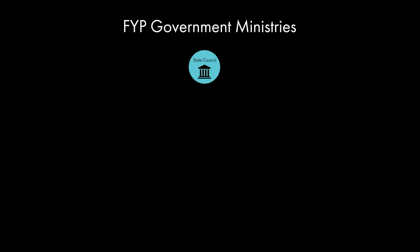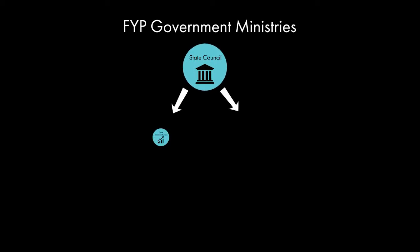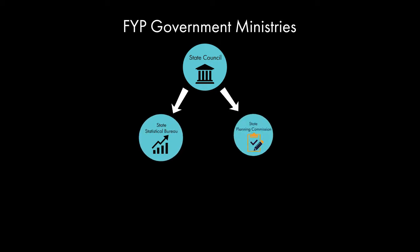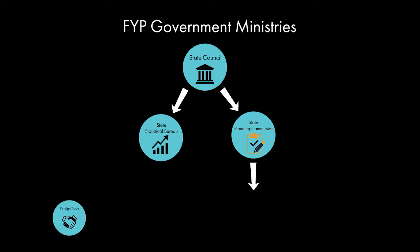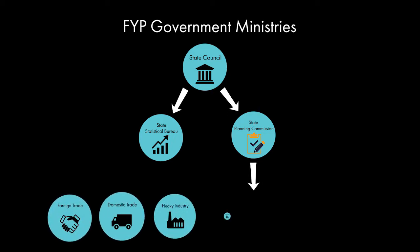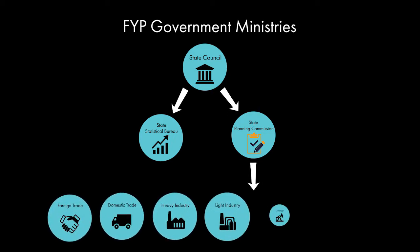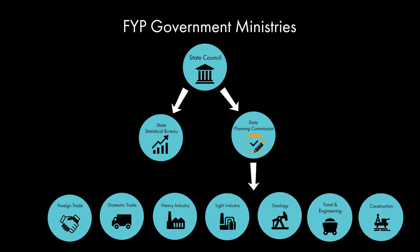Before the five-year plan was officially launched, two central bureaus in charge of running the show were established: the State Statistical Bureau and the State Planning Commission. There were also seven new ministries set up, each to control a specific area of the economy and production, being the ministries of foreign trade, domestic trade, heavy industry, light industry, geology, food and engineering and construction. I don't know why food and engineering are one department, but whatever.